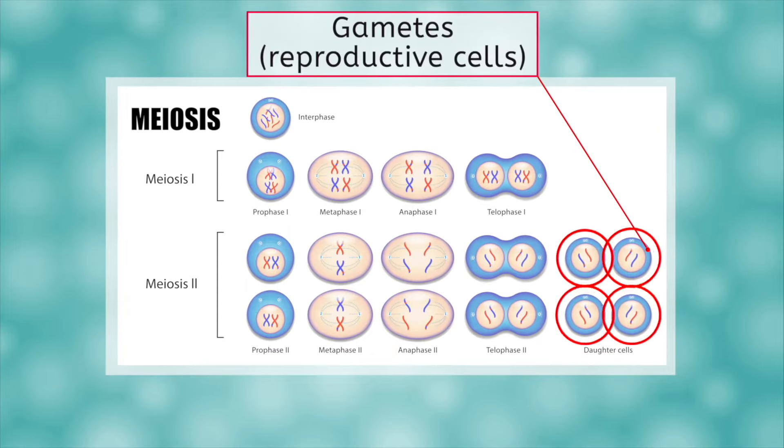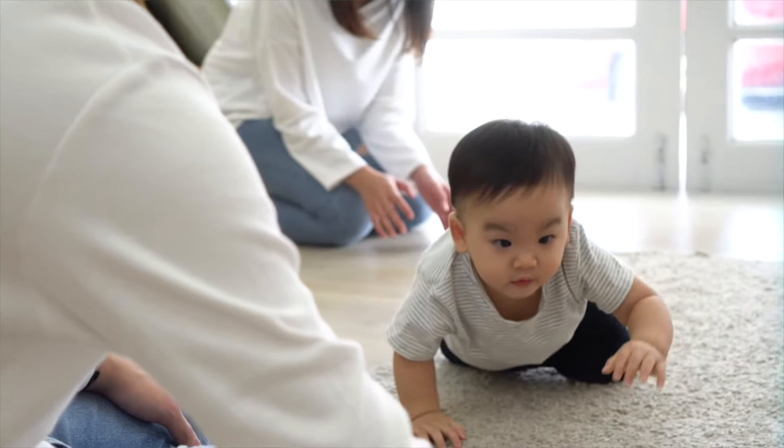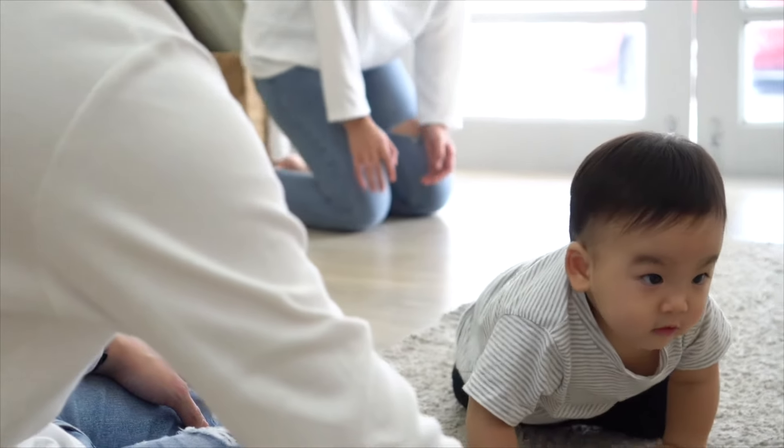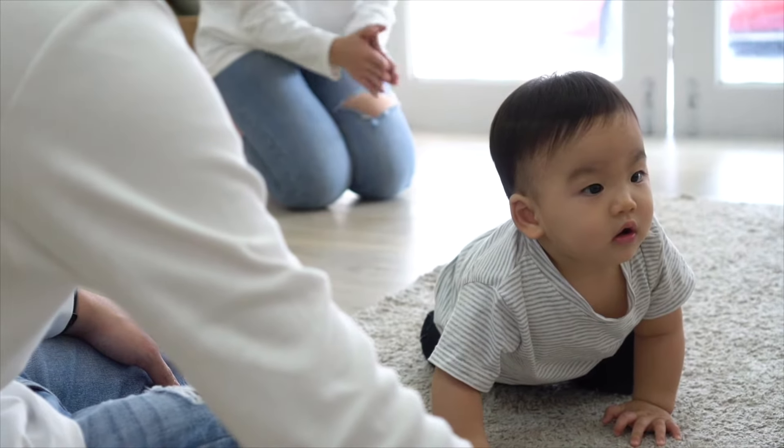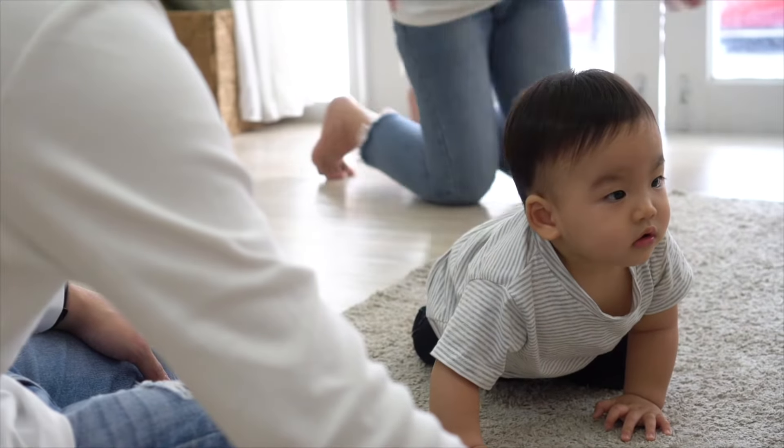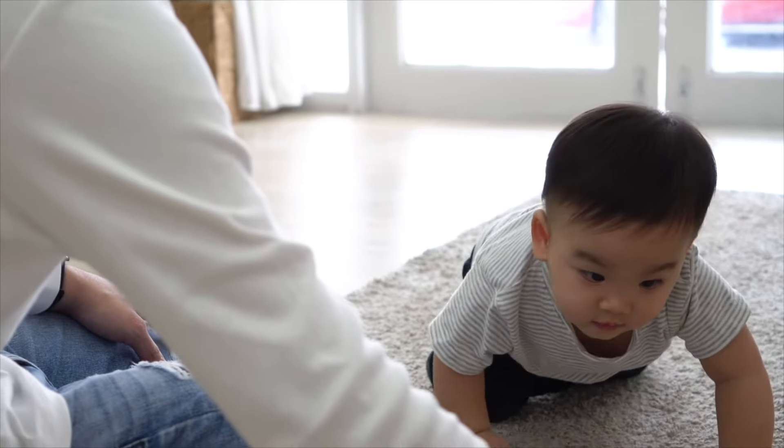Your reproductive cells or gametes only contain half of your DNA because they are made through meiosis. So if you decide to have children someday, they will get exactly half of your chromosomes. The other half of their chromosomes will come from the gamete of their other parent, and which half they get from each of you is totally random.